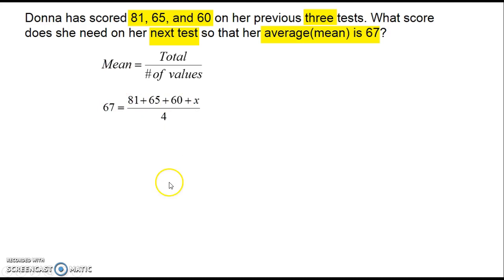Tidy up the equation, and then multiply both sides by 4. Subtract 206 from each side of the equation, and we see that Donna needs to score 62 in her next test so that her mean will be 67. Thank you.